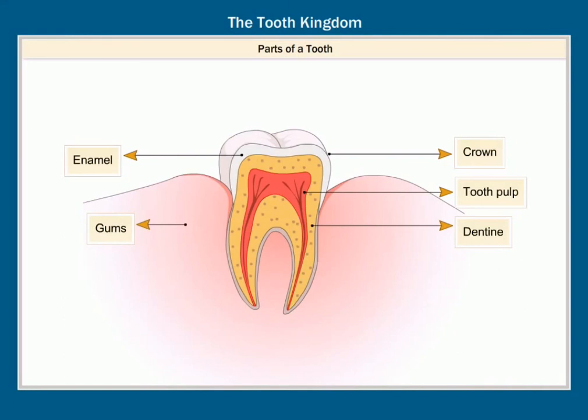The part of the tooth that is found below the gum is the root. It is covered by a cement-like material called cementum, which holds the tooth firmly to the jawbone.